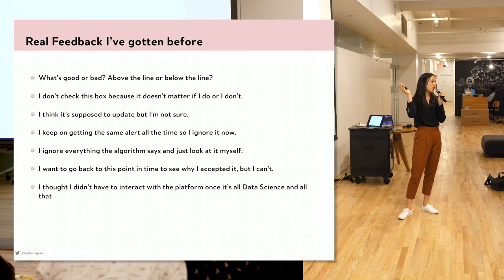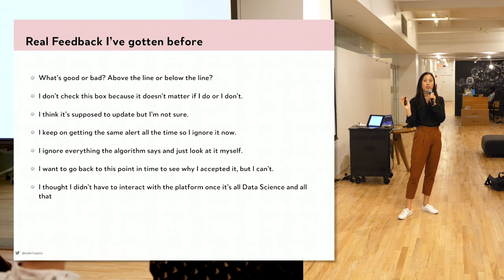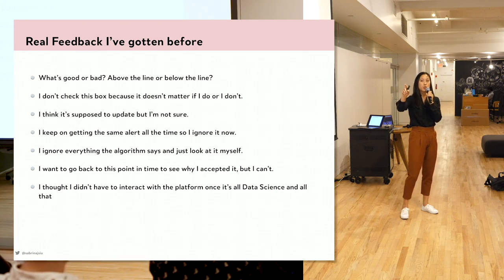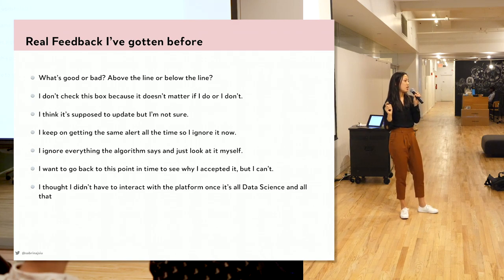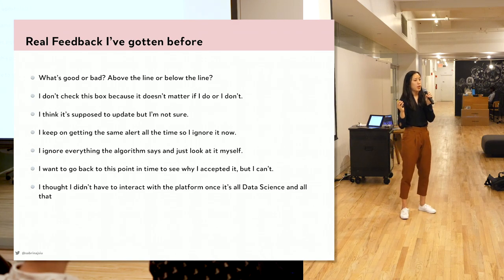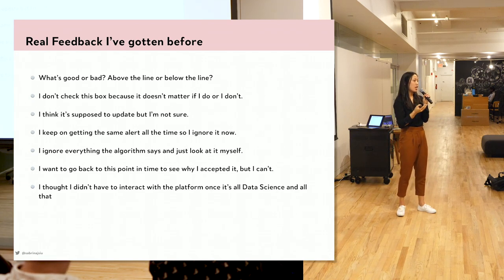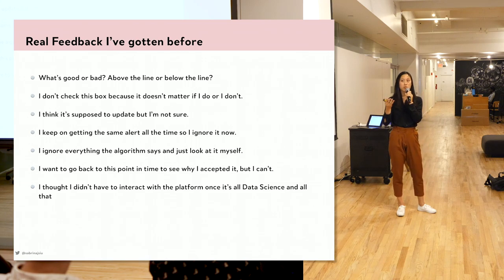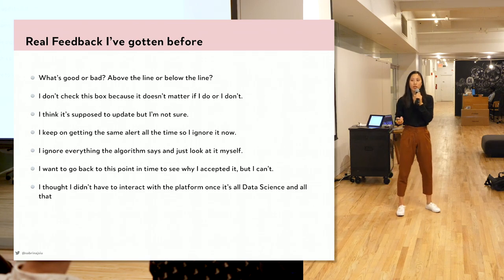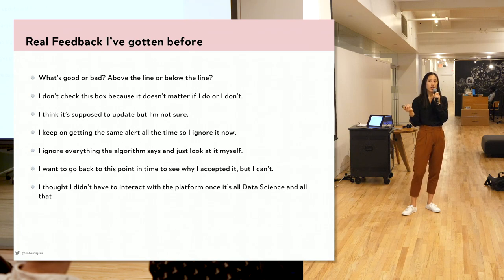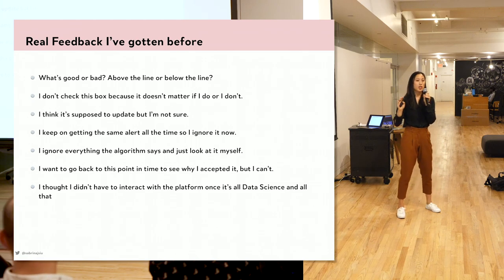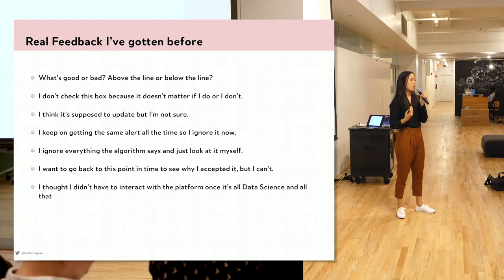Other feedback: 'I don't trust it, I just ignore what it says and do it myself.' And: 'I want to go back in time to see why I accepted it, but I can't.' Historical behavior is really important to capture — if the model is now overfit, you need to see what happened, whether you mislabeled in the past, or whether certain data categories skewed things. Also, users thought they didn't have to interact with the platform once it was set up — we need to empower them to keep giving feedback.